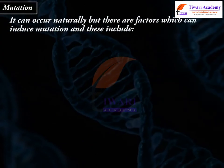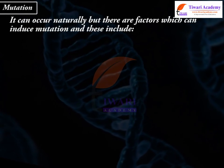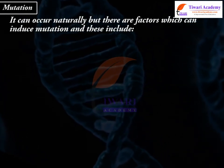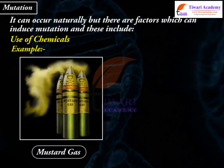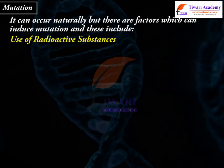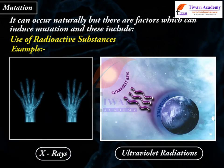Mutations can occur naturally, but there are factors which can induce mutation. These include the use of chemicals, for example mustard gas and coal cassines, as well as the use of radioactive substances, for example X-rays and ultraviolet radiations.